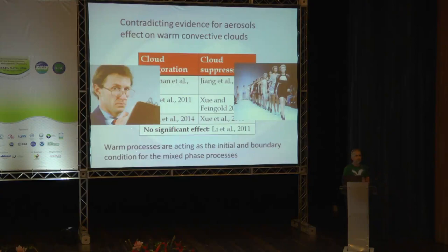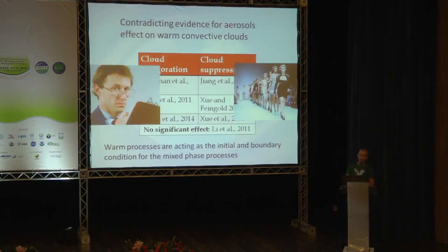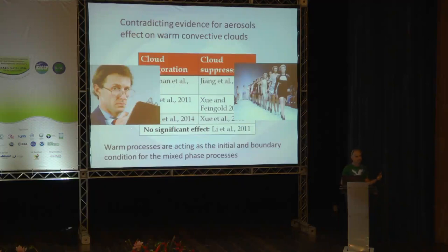Those who say invigoration does not exist disagree among themselves about the reason. Some say it's cloud contamination — the aerosol measured near clouds is biased by humidification and 3D effects. Others say the correlations are not cause and effect but meteorology: the same meteorology that produces deeper convective clouds also produces larger aerosol concentrations. No matter how we tortured the data, we always see invigoration — we couldn't find a way to slice it for meteorology or eliminate cloud contamination.